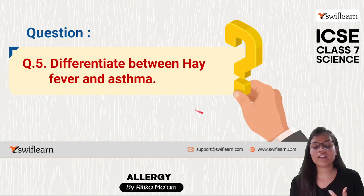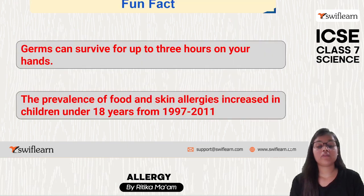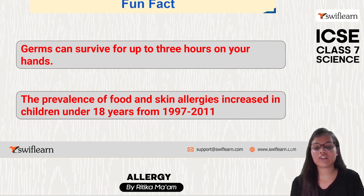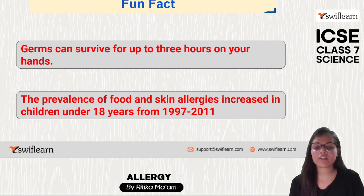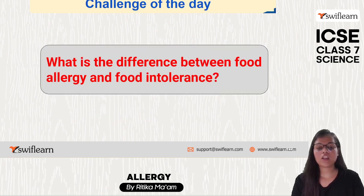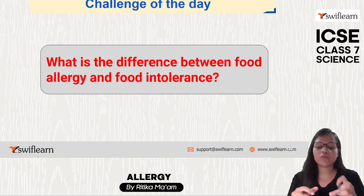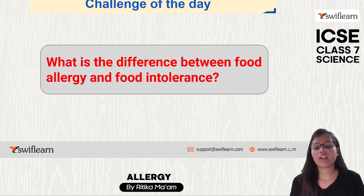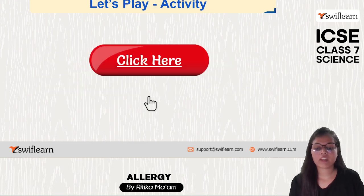Fun fact: germs can survive up to three hours on your hands, and the prevalence of food and skin allergies increased in children under 18 years from 1997 to 2011. What is the difference between food allergy and food intolerance? Food allergy involves an immune system response, whereas food intolerance is a condition where the body cannot digest a particular food — for example, lactose intolerance, where the body cannot digest milk.